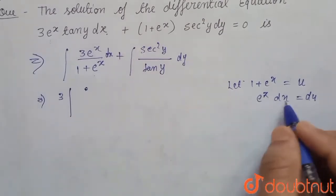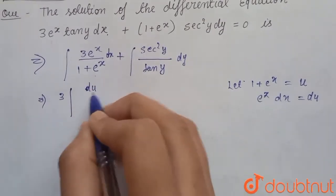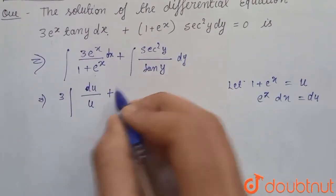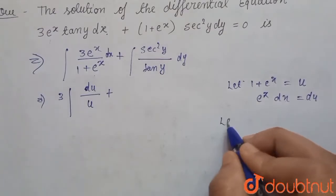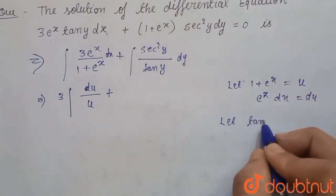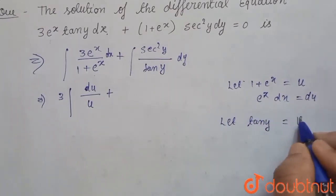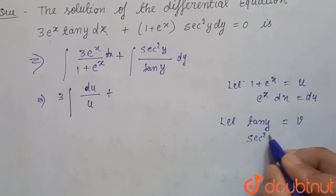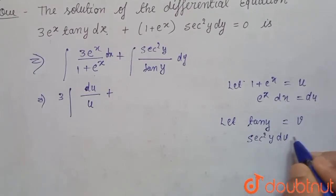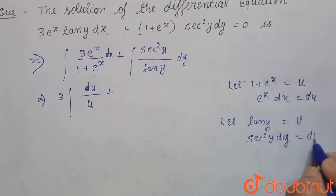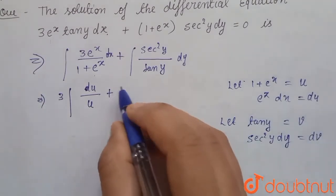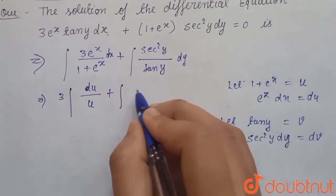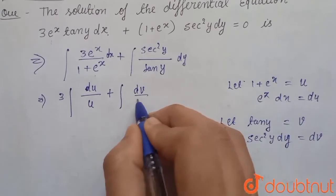So we can write e^x dx as du upon u. Plus here, let tan y equals v. So now differentiate this with respect to y. So here we get sec²y dy equals dv. So here we can write dv upon v